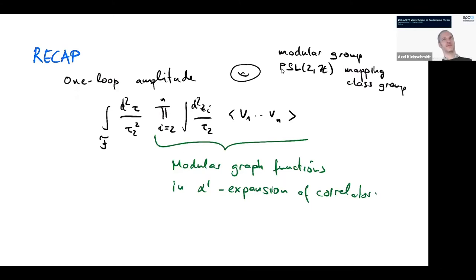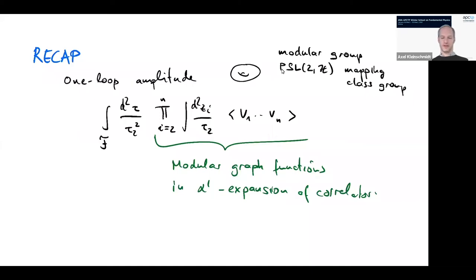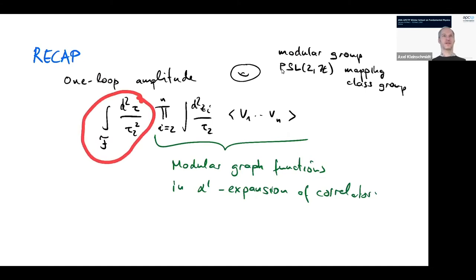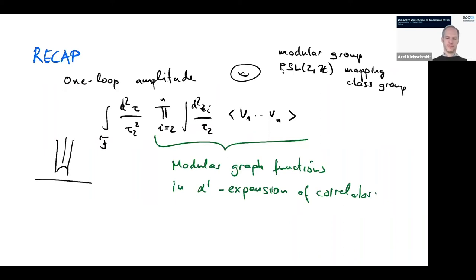In order to talk about what is happening for higher loop string perturbation theory, I recall that yesterday we looked at the first instance, which was one loop in closed superstring theory — the torus. This was the first time we had to deal with the fact that there are different Riemann surfaces and a non-trivial moduli space of Riemann surfaces. This was the integral over the fundamental domain, and tau was labeling the inequivalent tori. The region for the fundamental domain F looks like this on the complex upper half plane.